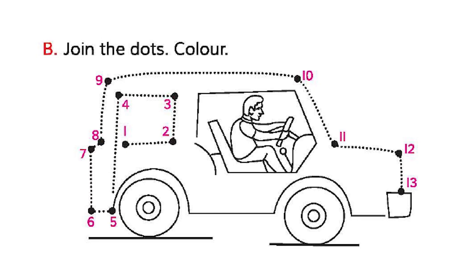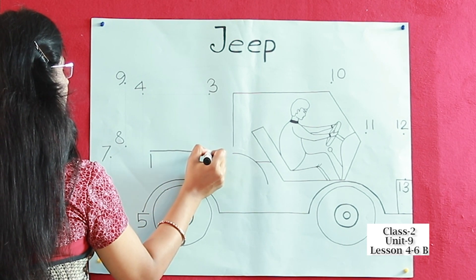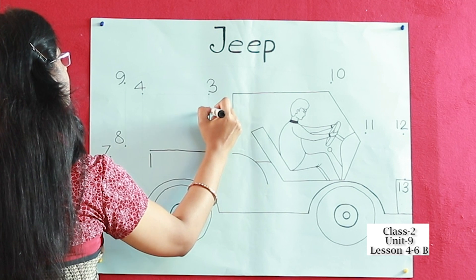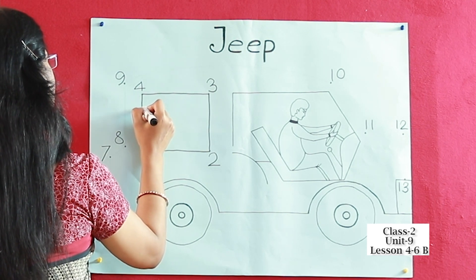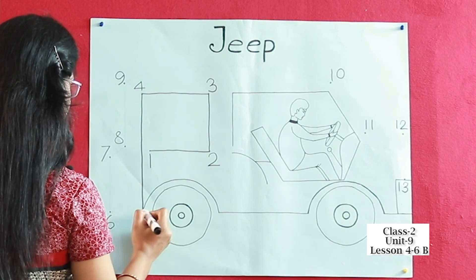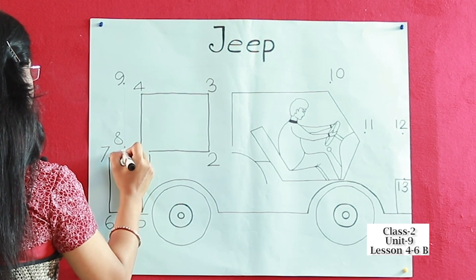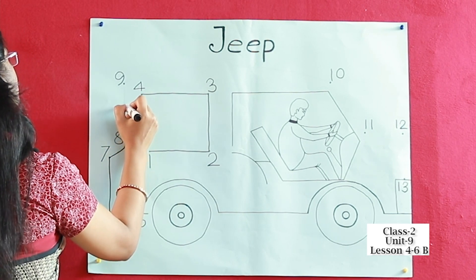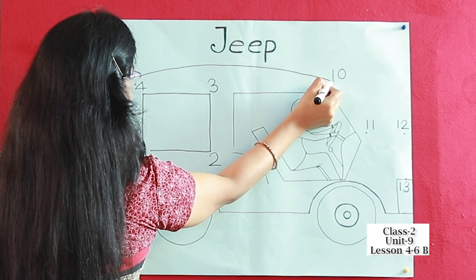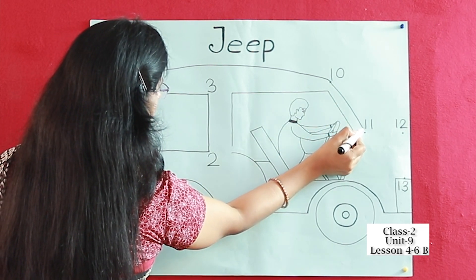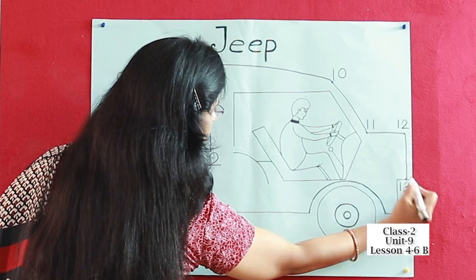I am going to join the dots. Please follow me. I am going to join the numbers. Now I am going to join 8 to 9, then 9 to 10, then 10 to 11, and 11 to 12, and last 12 to 13. Now you have to draw it in your book.